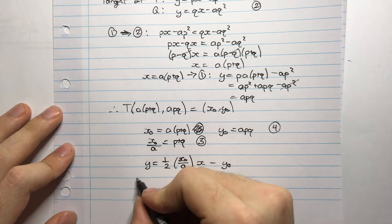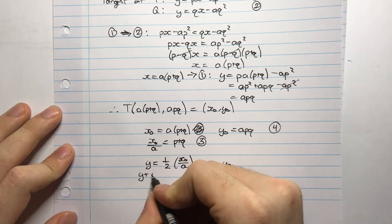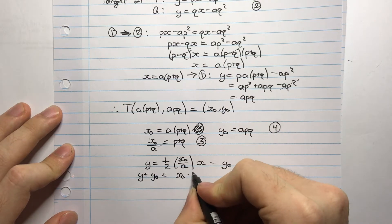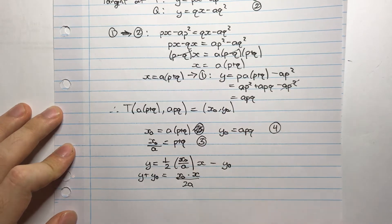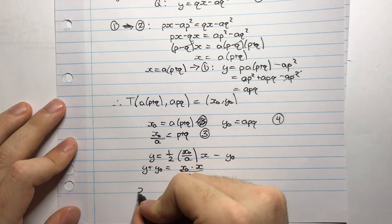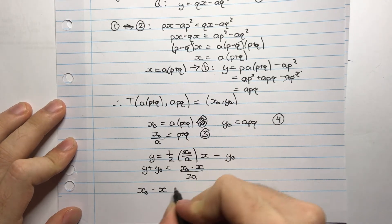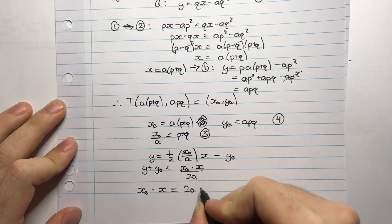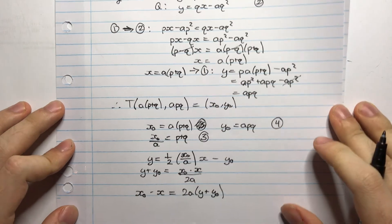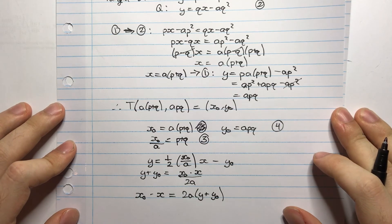Moving this over, I have Y plus Y0 equals X0 multiplied by X divided by 2A. And then just multiplying everything by 2A, and I'm left with X0 times X equals 2A into Y plus Y0. And this is known as the equation of the chord of contact.